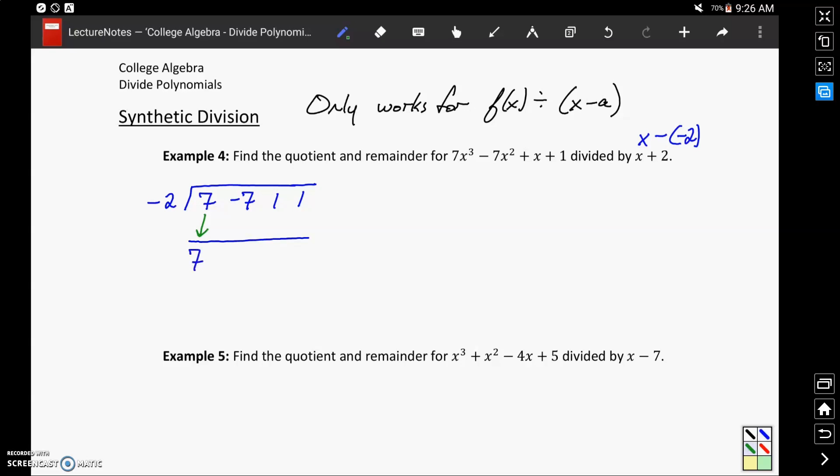From there we'll take our value for a, which in this case is negative 2, and multiply it by this value that we just dropped down, and move up and to the right in a diagonal pattern. After multiplying those together we'll get negative 14.